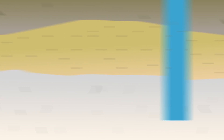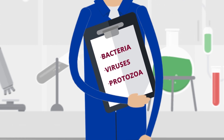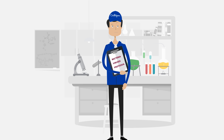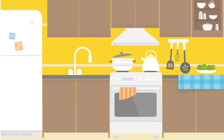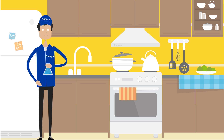But E. coli is just one type of many potentially dangerous contaminants. That's why a coliform test is so important. Besides E. coli, the test also checks for other dangerous strains of bacteria, viruses, and protozoa. Your local Culligan Man is trained and equipped to collect a water sample and send it to our EPA-certified lab for analysis.